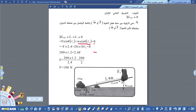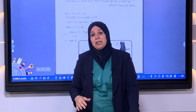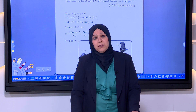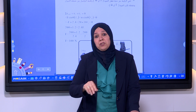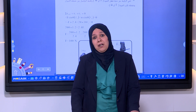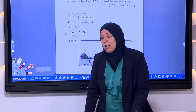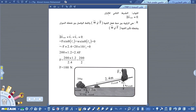العزم إذا كان باتجاه دوران عقارب الساعة نعوض عنه بإشارة سالبة، وإذا كان باتجاه معاكس نعوض عنه بإشارة موجبة. لذلك نعوض: ناقص F × 2.4 زائد 20 × 10 × L2 يساوي صفر. ضربنا 20 في 10 لأن المعطى كتلة ويجب تحويلها إلى وزن.